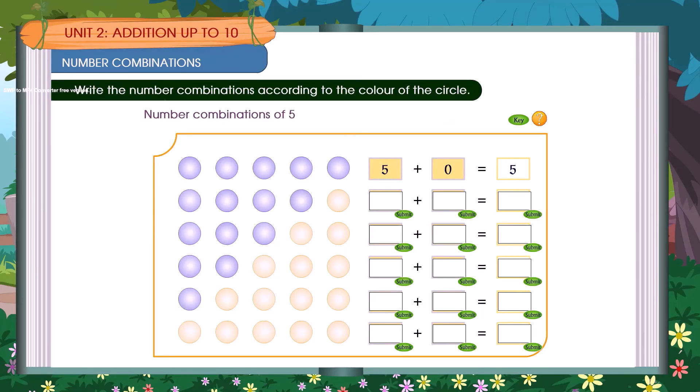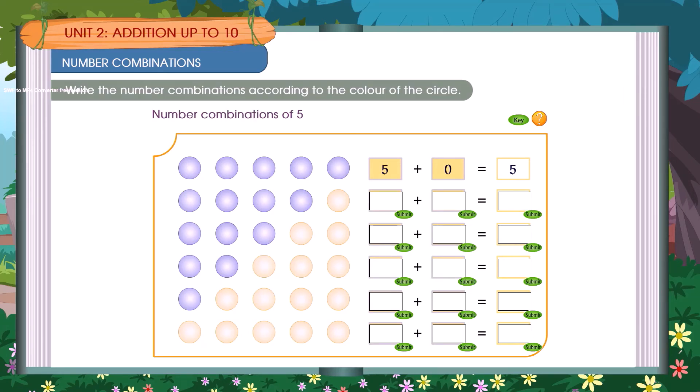Write the number combinations according to the color of the circles. Number combinations of 5.